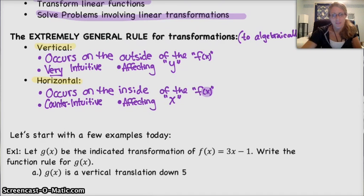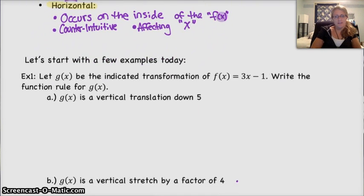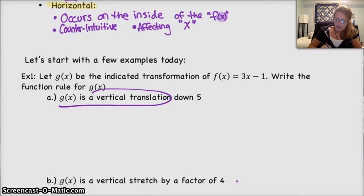Alright, so let's do a couple examples. Example 1. We're going to let g of x be the indicated transformation. So a is going to be a different transformation than b. Separate problems. But we're going to only deal with the function f of x equals 3x minus 1. And then we're going to come up with the function rule for g of x, which is the new transformed function. So a, g of x is a vertical translation down 5.